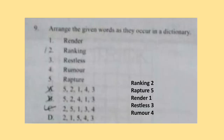Question 9: Arrange the given words as they occur in a dictionary. 1. Render, 2. Ranking, 3. Restless, 4. Rumour, 5. Rapture. If you arrange these words according to the dictionary, they will come as: Ranking, Rapture, Render, Restless, Rumour. So the sequence will be 2, 5, 1, 3, 4. Option C is the correct answer.